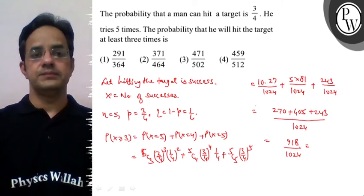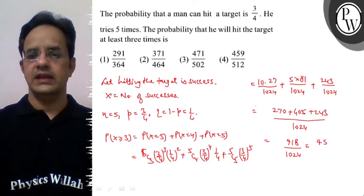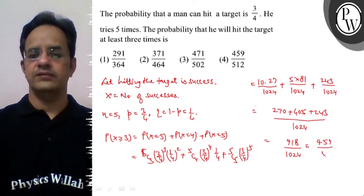Simplifying by dividing by 2, we get 459/512.